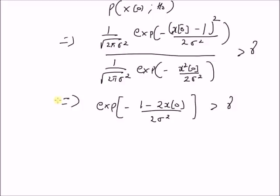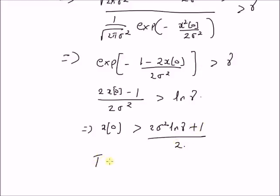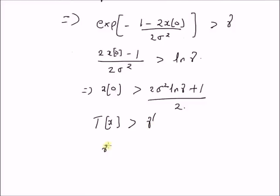By taking logarithms on both sides, we have (2x₀ - 1)/(2σ²) greater than log(gamma). Rearranging the terms, x₀ is greater than σ²·log(gamma) + 1/2. This means the test statistic T(x) equals x₀ should be greater than a new threshold gamma dash, where gamma dash equals σ²·log(gamma) + 1/2.